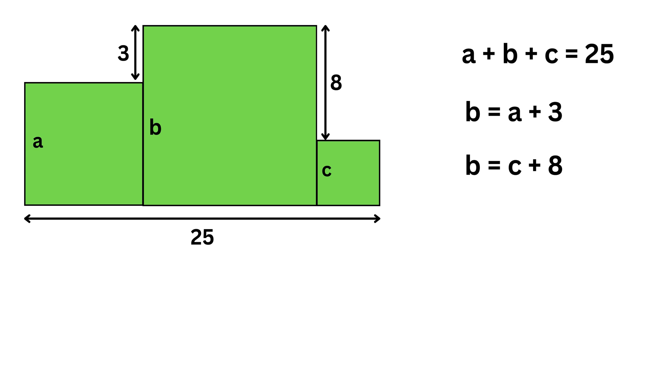This way, we now have three variables and three equations, so we can easily find the values of A, B, and C. For that first substitute the value of B equals C plus 8 here to get C plus 8 equals A plus 3. Now subtract 3 from both sides to get this as A equals C plus 8 minus 3 or 5.